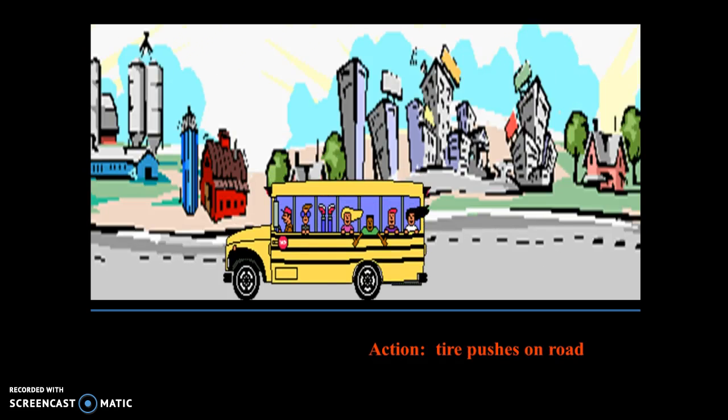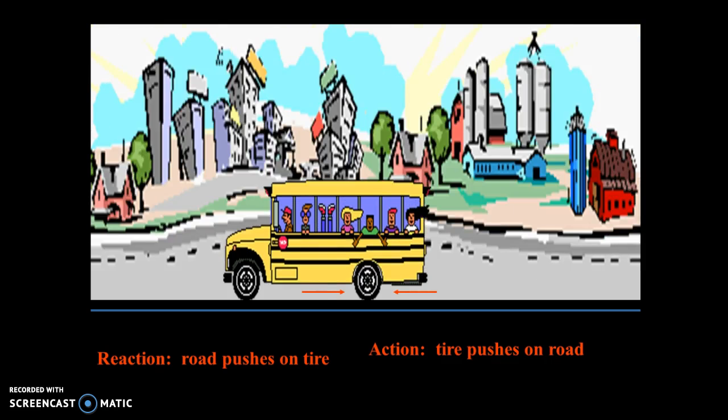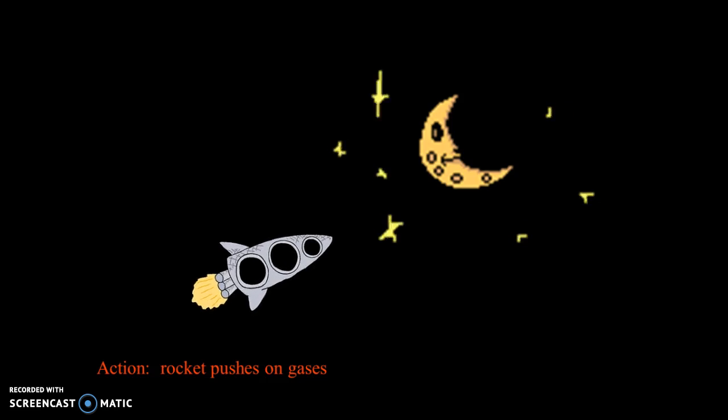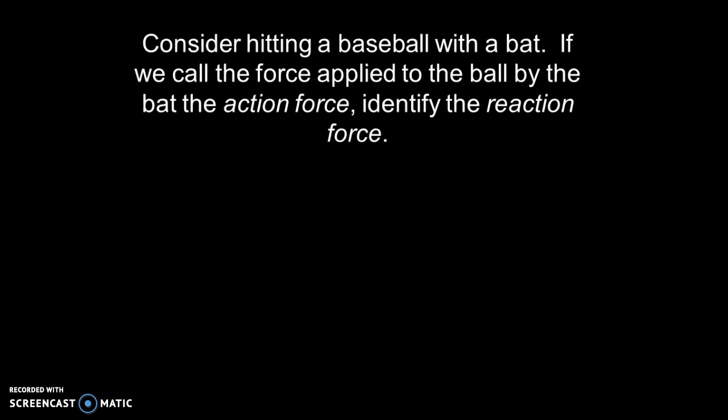Another example. Action is the tires pushing on the road. The reaction is the road pushing on the tire. This is the source of friction that allows the bus to move. Another one is the rocket ship going out into space. It pushes the gases out of the rocket. Well, at the same time, the gases push back on the rocket, allowing it to launch into space.